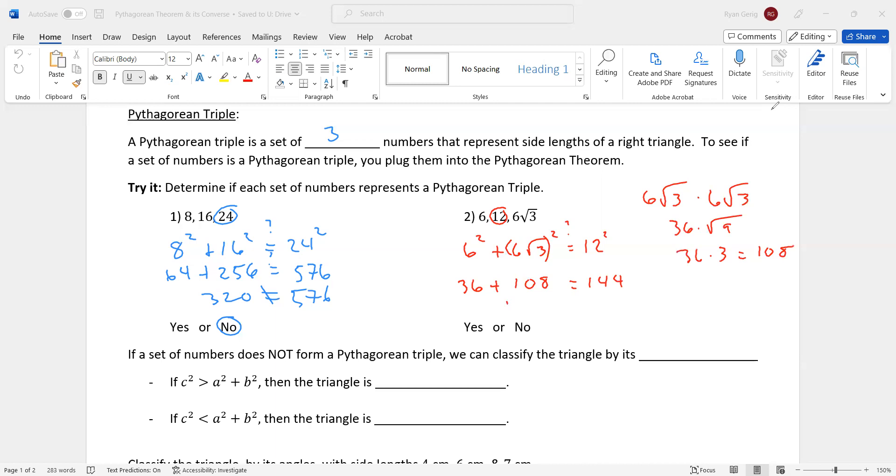36 plus 108 is 144. And look, they are, in fact, equal, which means those sides make up a Pythagorean triple. It makes a right triangle.